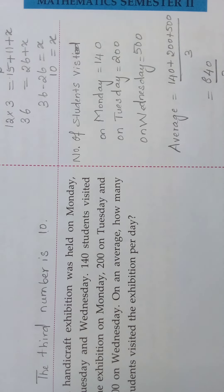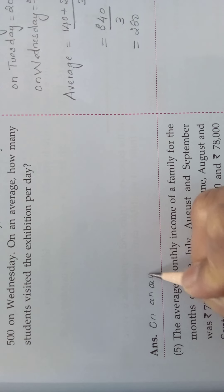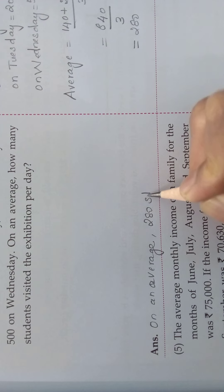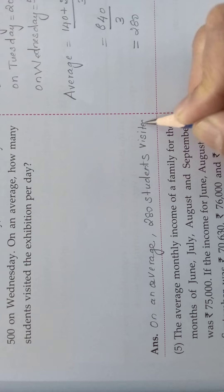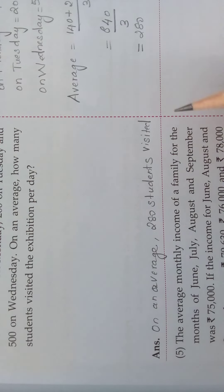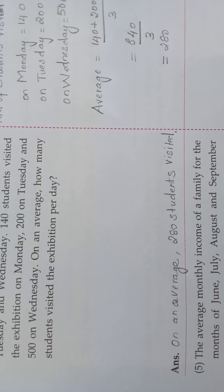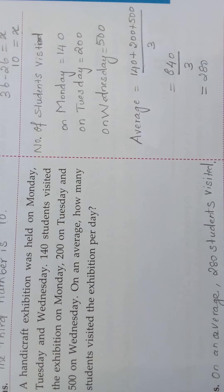So what is the average? On an average, 280 students visited the exhibition per day. Understood, children? This is the answer. You should find the average. In this way, you can find the average of the given numbers.